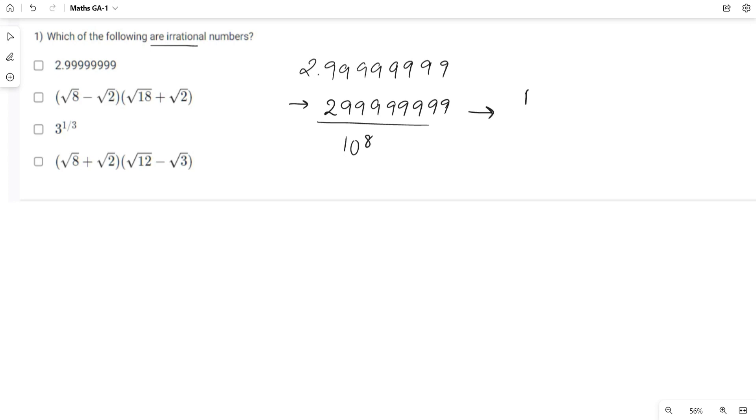As you can see, it is in p by q form, where q is 10 raised to 8 which is not equal to 0 and p belongs to real numbers. Hence it is a rational number, so the first option is out.